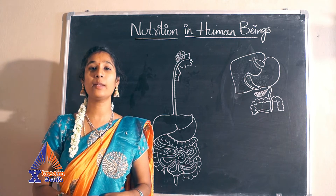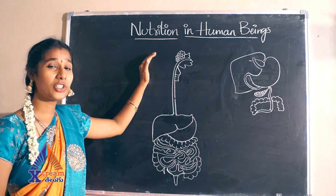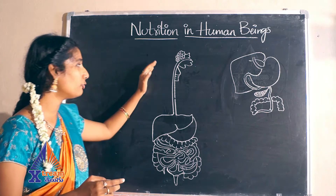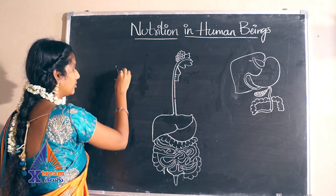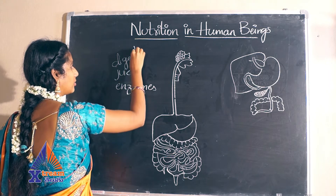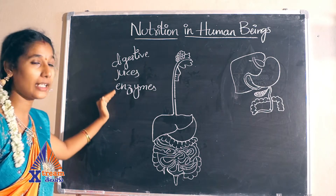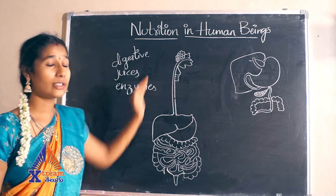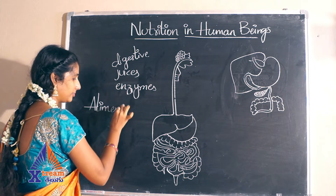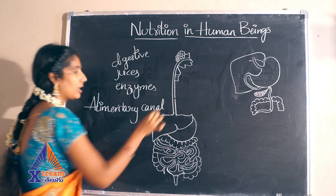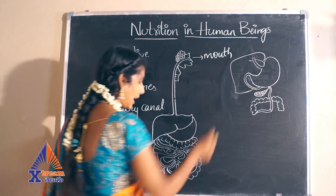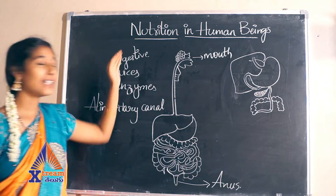Hi viewers, welcome to Extreme Telco channel. Today we are going to discuss the topic: Nutrition in Human Beings. The nutrition in human beings consists of the digestive system, which consists of different parts and involves different digestive enzymes and juices. The digestive system involves a very long tube called the alimentary canal, which starts with the mouth and ends with the anus.